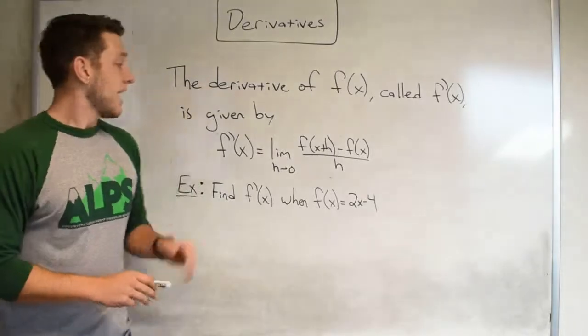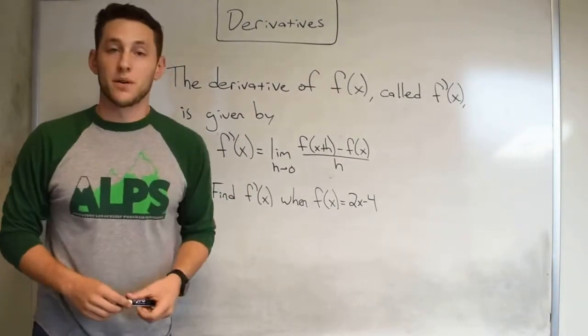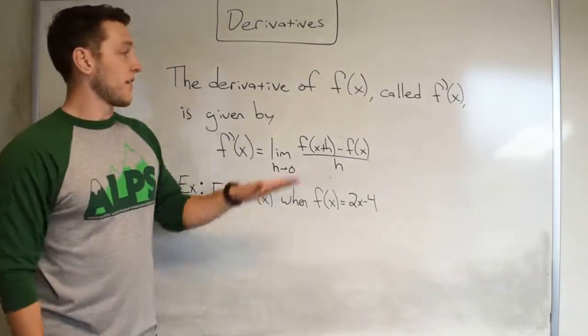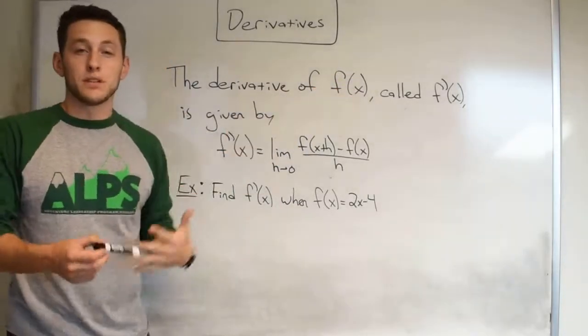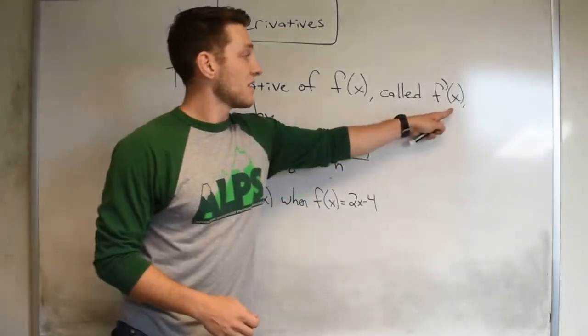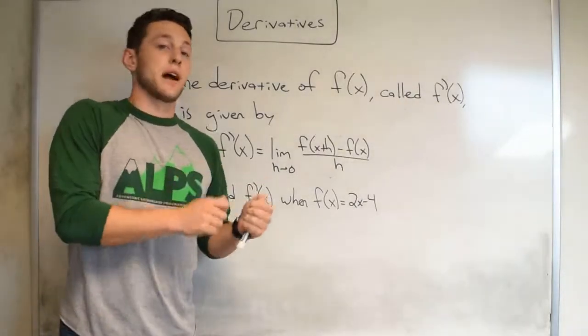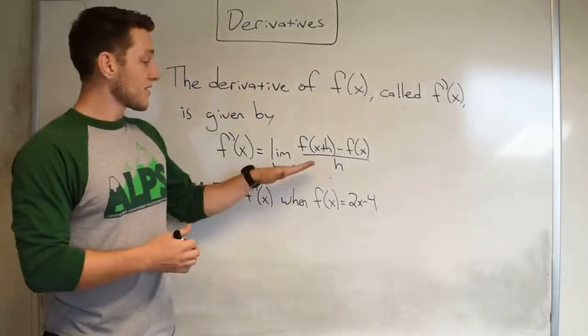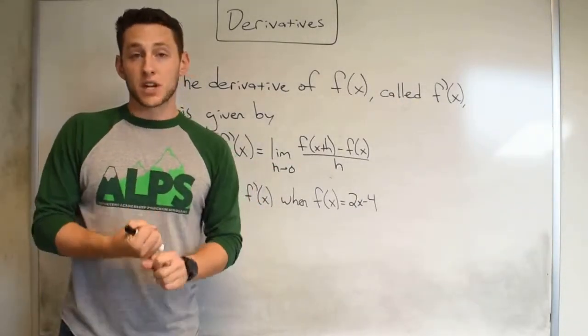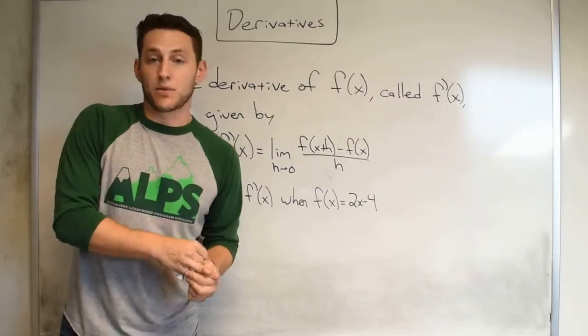Now the derivative, f prime of x, really is just the limit as h approaches zero of the difference quotient. And now notice, if our function is f of x, all we really do to denote this, shorthand-wise, would be to write f of x with a little tick mark, and yet again, that's going to be called f prime of x. Now this gives us both the instantaneous rate of change and the slope of the tangent line at any given point x, once we plug it in.